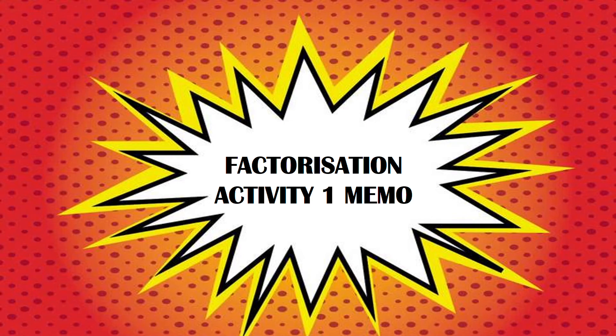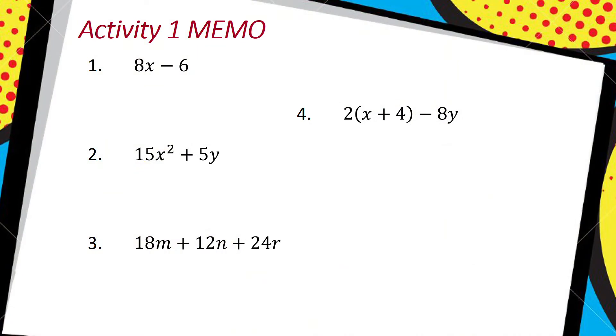Hi guys, this is the Activity 1 Memo. I asked you to factorize these four questions. I'm only working with numbers, not variables yet, so I need to ask myself: what's the highest common factor of 8 and 6? It's 2.